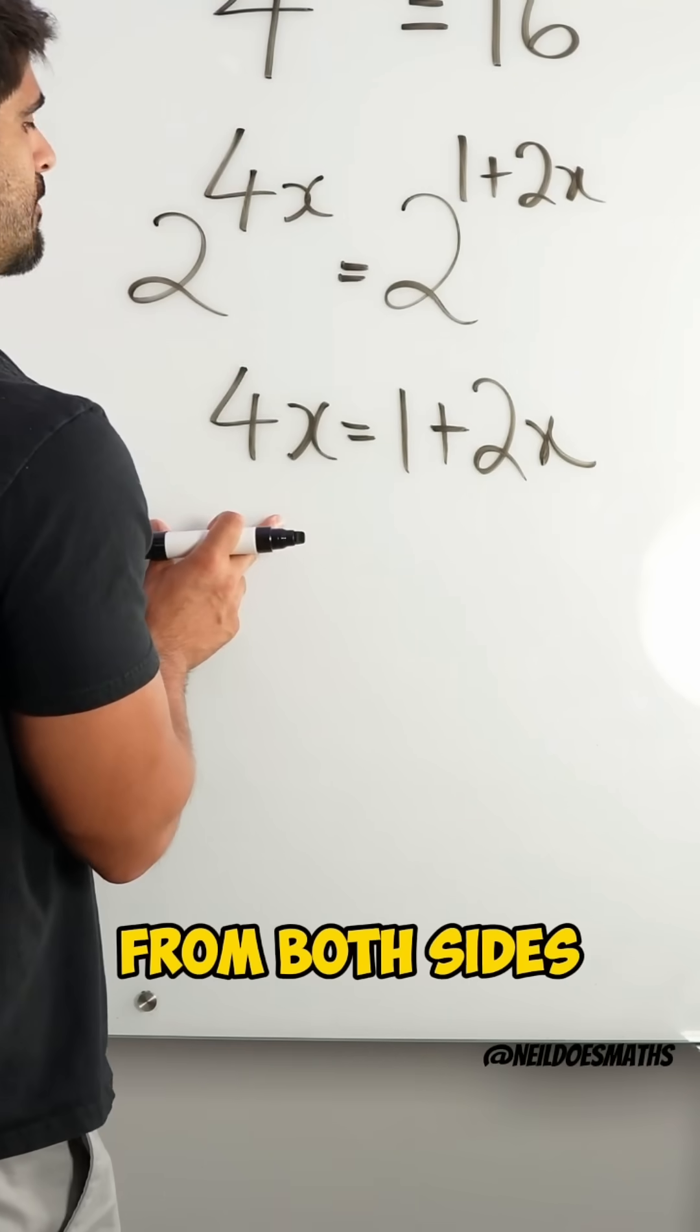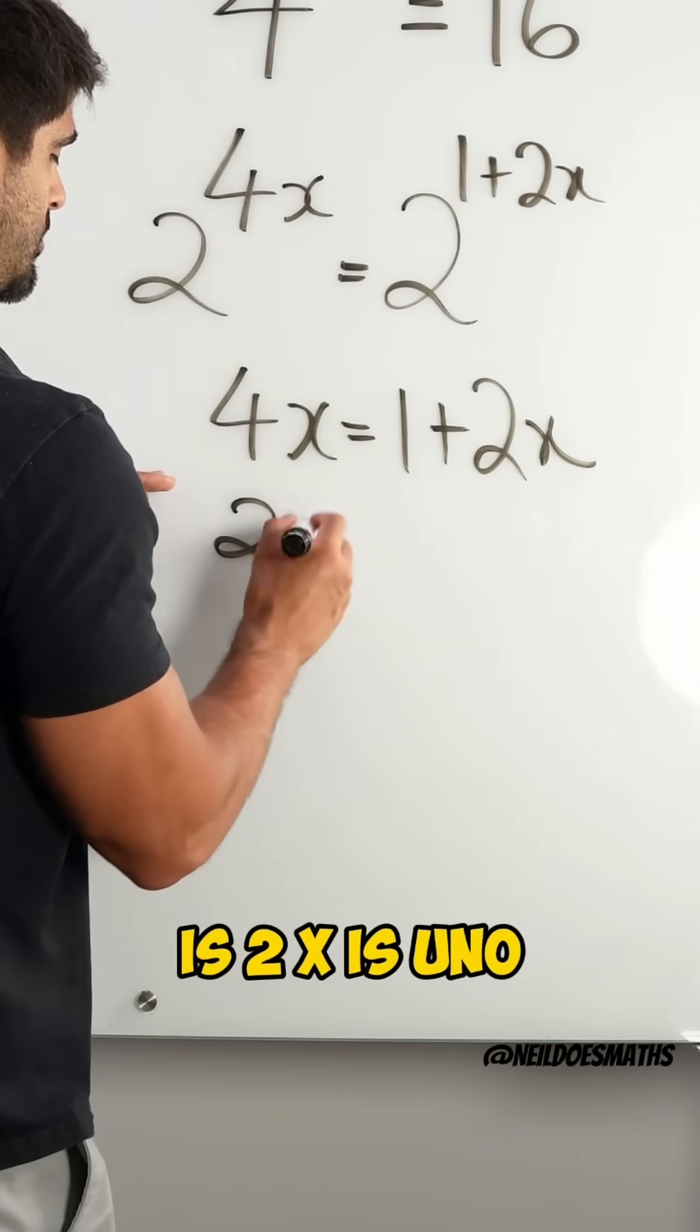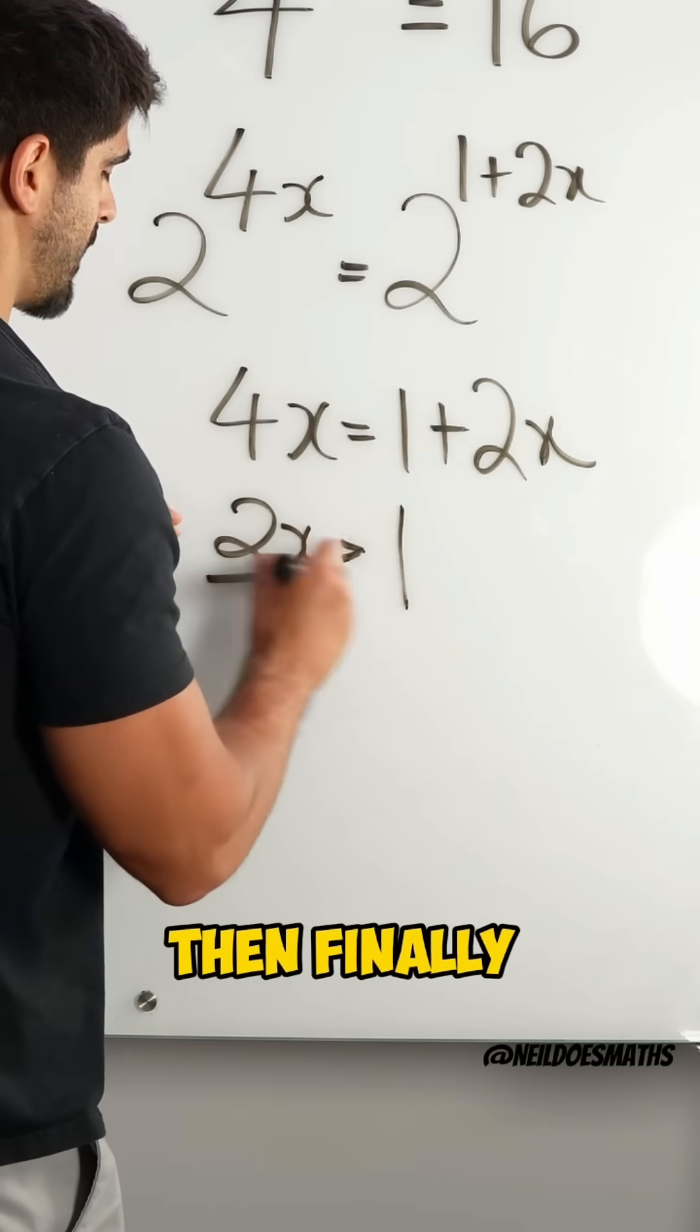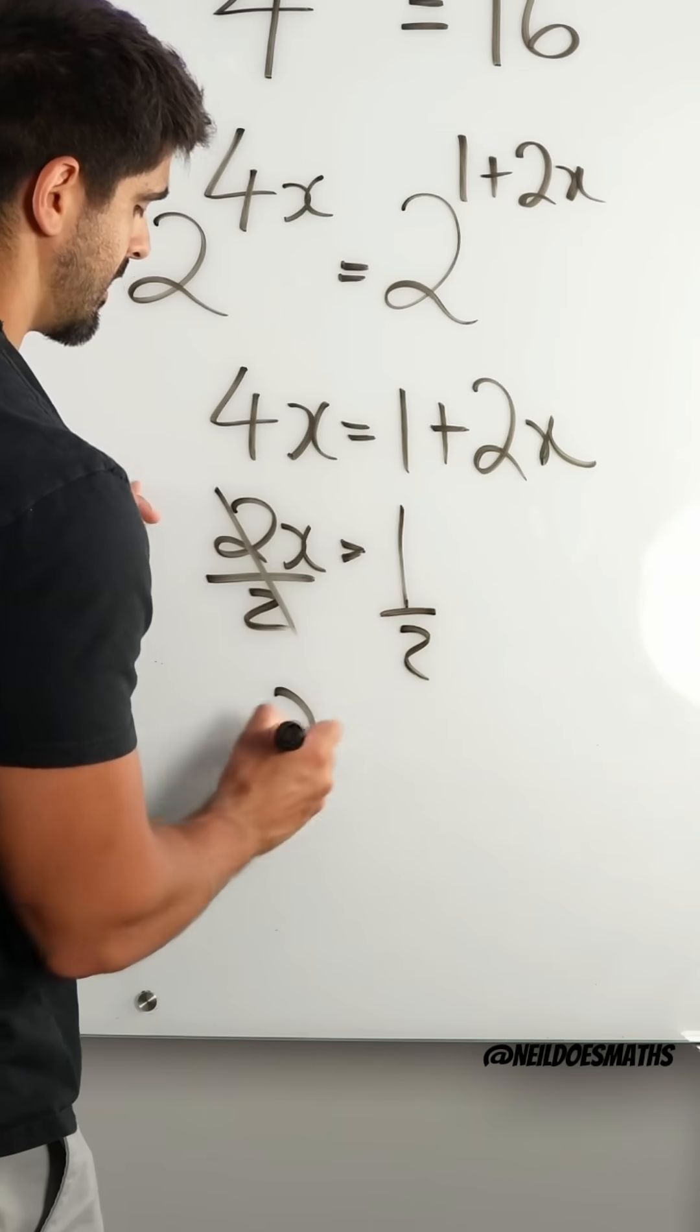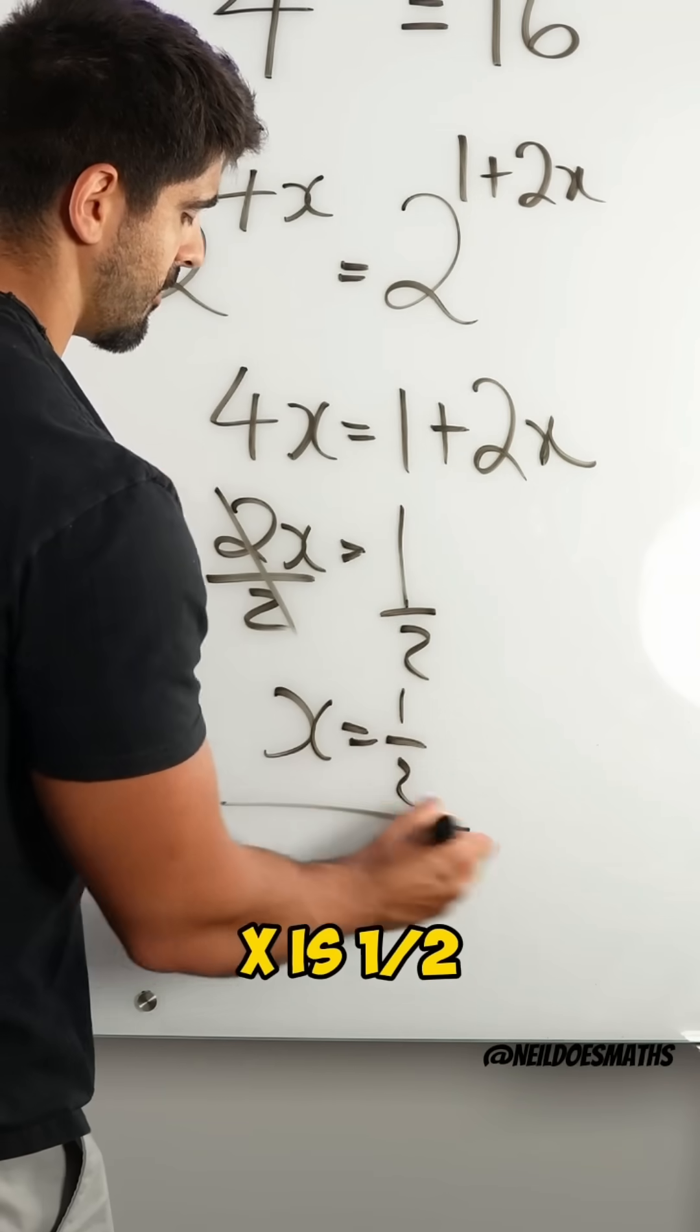4x minus 2x is 2x is 1. Then, finally, we divide both sides by 2. x is 1 half. Nice!